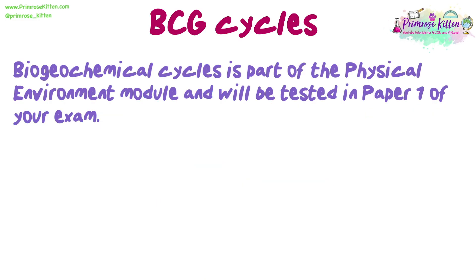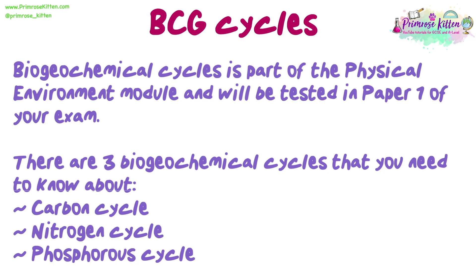Biogeochemical Cycles is part of the Physical Environment module and will be tested in Paper 1 of your exam. There are three biogeochemical cycles that you need to know about: the carbon cycle, the nitrogen cycle, and the phosphorus cycle.